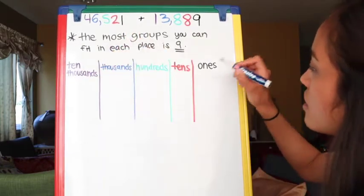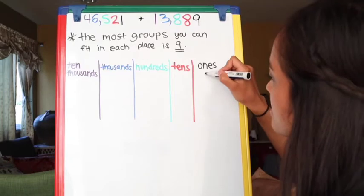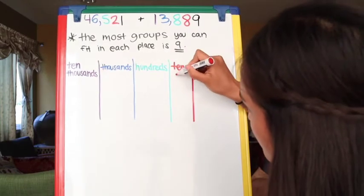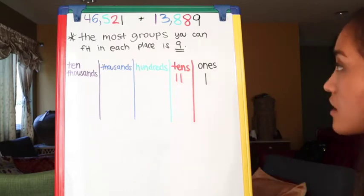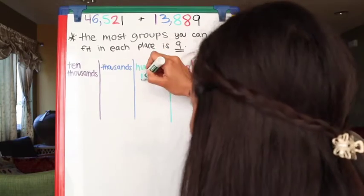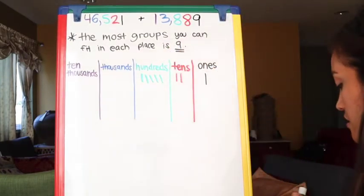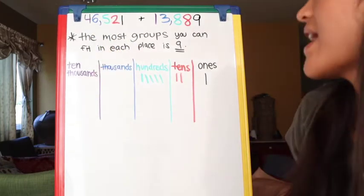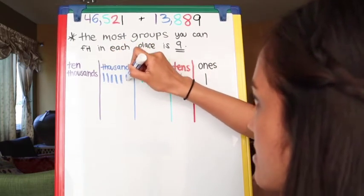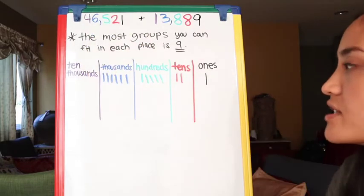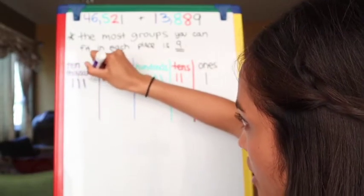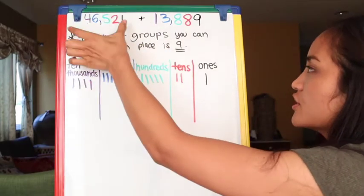Looking at the ones place, we have one group of ones. Over here in the tens place, we have two groups of tens. How many hundreds do we have? Five — one, two, three, four, five. Thousands, we have six groups of thousands — one, two, three, four, five, six. And ten-thousands, we have four — one, two, three, four.